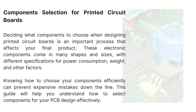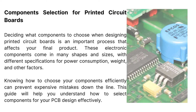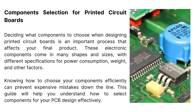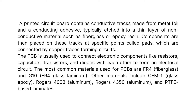Deciding what components to choose when designing printed circuit boards is an important process that affects your final product. These electronic components come in many shapes and sizes, with different specifications for power consumption, weight, and other factors. Knowing how to choose your components efficiently can prevent expensive mistakes down the line. A printed circuit board contains conductive tracks made from metal foil and a conducting adhesive, typically etched into a thin layer of non-conductive material such as fiberglass or epoxy resin.